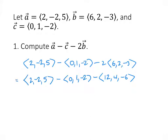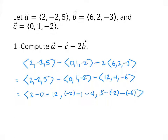Now we combine these vectors together. In the X component, we've got 2 minus 0 minus 12. In the Y component, we've got -2 minus 1 minus 4. And in the Z component, we have 5 minus negative 2 minus negative 6. So 2 minus 0 minus 12 is -10, and -2 minus 1 minus 4 is -7.